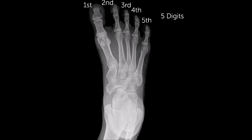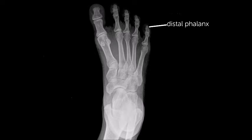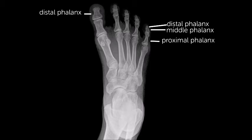Notice the great toe has only two phalanges, whereas the second through fifth have three each, combining for a total of 26 bones in the foot. The second through fifth toes have three phalanges described by their position, whereas the first has only two, again described by position.